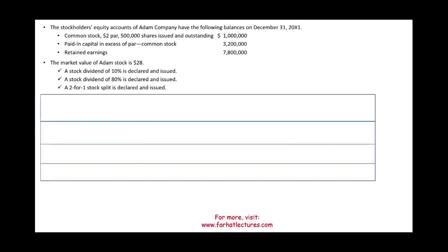Hello and welcome to this session in which we would look at an example of stock dividend. The stockholders' equity of Adam's company have the following balances as of December 31st, 20x1. Common stock, $2 par value, half a million shares, total of a million. Paid in capital in excess of par, common stock, 3.2 million. And retained earnings is 7.8 million. All in all, the total equity for this company is 12 million.